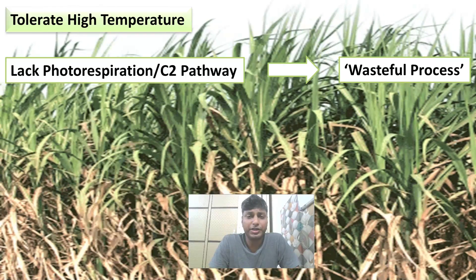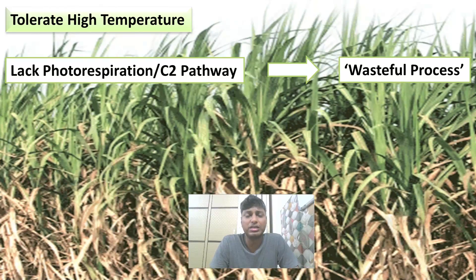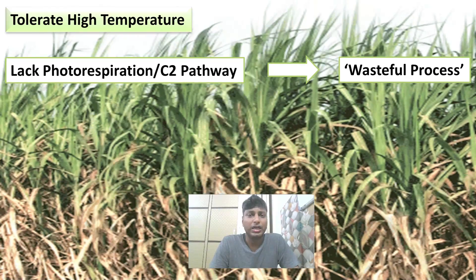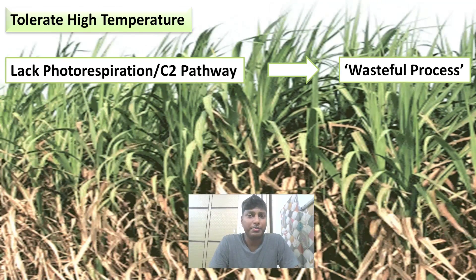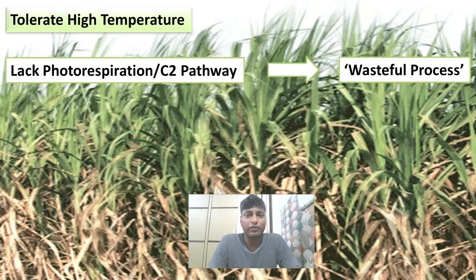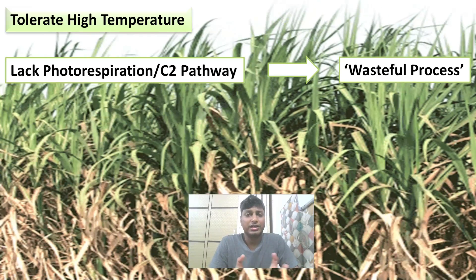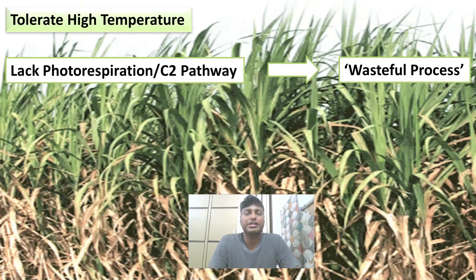What is photorespiration? Photorespiration is basically a wasteful process which occurs in C3 plants. To understand why it is wasteful, we need to understand the concept of the C2 pathway — I will make a separate video on that. For now, remember that photorespiration is not a useful process; it is indeed wasteful. C4 plants avoid photorespiration and as a result conserve a lot of energy, making them more efficient than C3 plants.